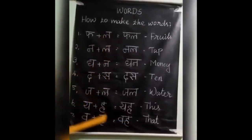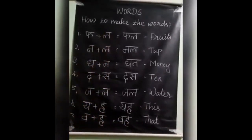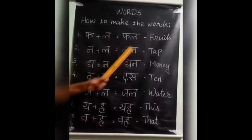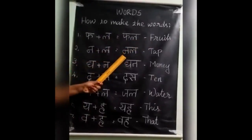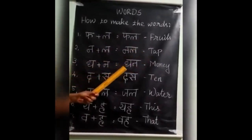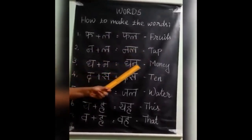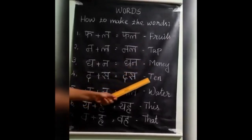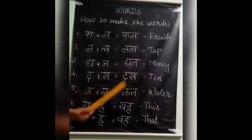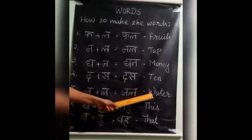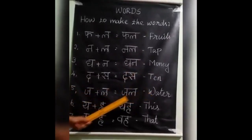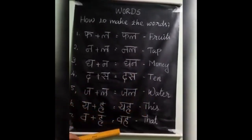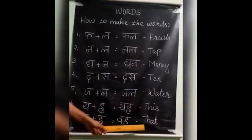Once again the meanings only: Fal — fruits. Nal — tap. Dhan — money. Das — ten. Jal — water. Yakh — this. Vah — that.